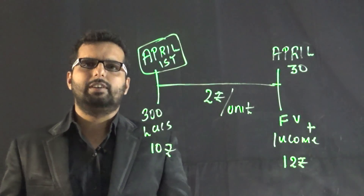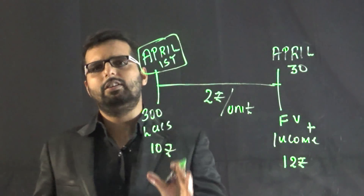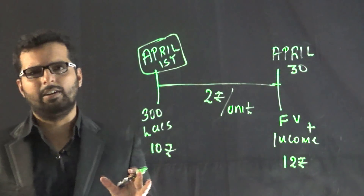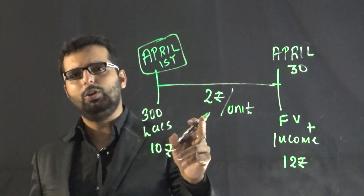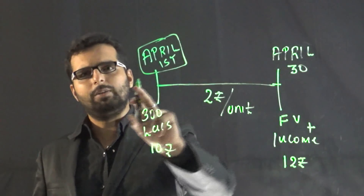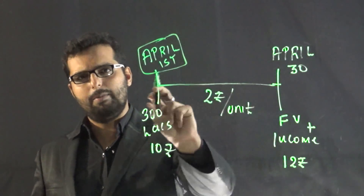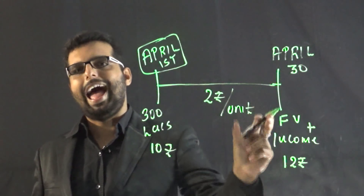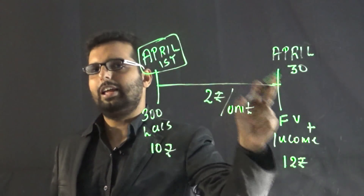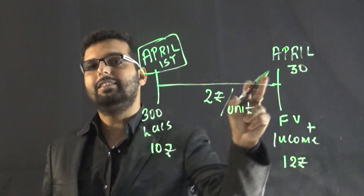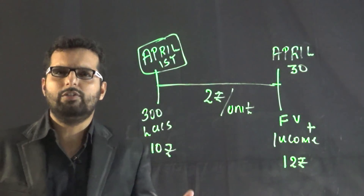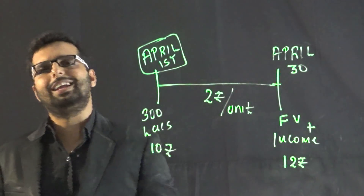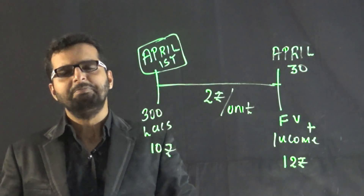This company has earned an income of 2 rupees per unit for the month of April. As on 30th April, this company is issuing new units, so new investors are going to bring in some money.